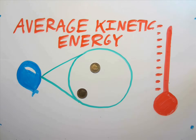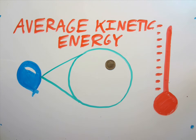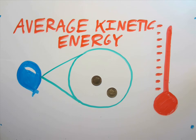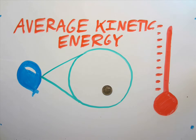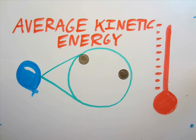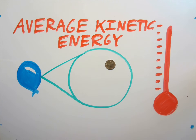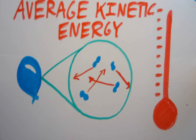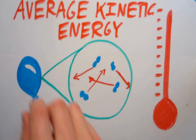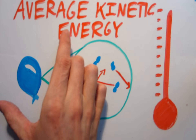The air molecules inside a balloon at room temperature are zipping around at about 1000 miles per hour. And when we say that the temperature of that air increases, we're saying that they're moving faster. As they speed up, they push outwards more, causing the balloon to expand.